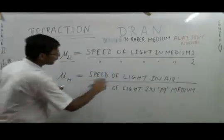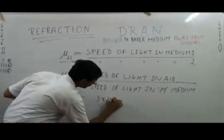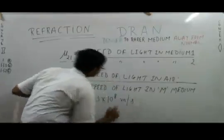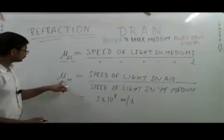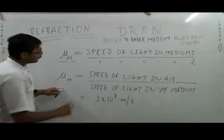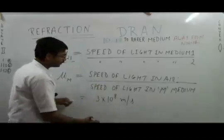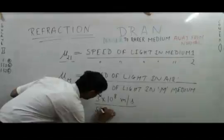Speed of light as we all know in air is 3 × 10^8 meters per second. Now for any numerical, if we wish to calculate the refractive index, we will be given both speeds. We just have to divide it and calculate the value of refractive index.